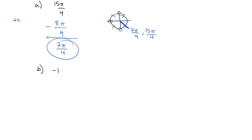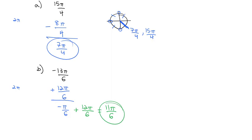Let's try negative 13π/6. Since we're negative, we add 2π with a common denominator of 6, adding 12π/6, which gives us negative π/6. Adding another 12π/6 gives us a positive 11π/6. Counting by sixths — like clock positions — 1, 2, 3, 4, 5, 6, 7, 8, 9, 10, 11π/6 is our result. So 11π/6 is coterminal with negative π/6, and both are coterminal with negative 13π/6.